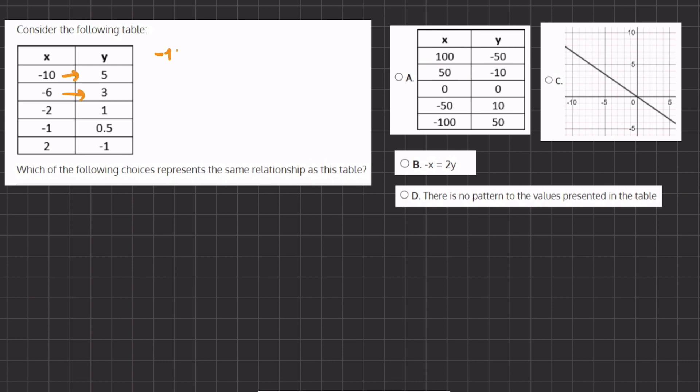We have negative 10, and how do we get to 5? It seems like we are multiplying by a negative half. Alright, and if we do this we get 5.